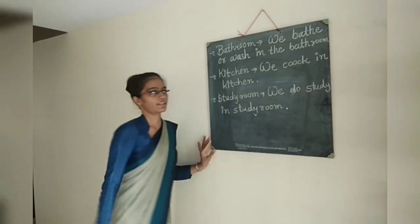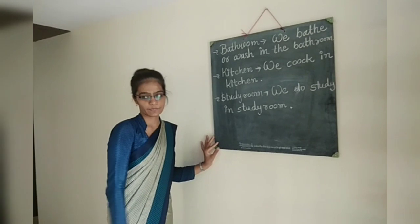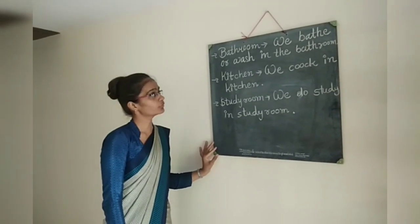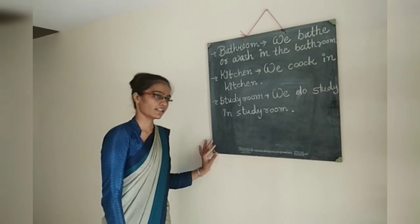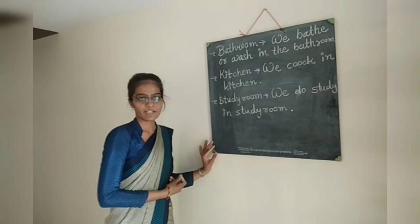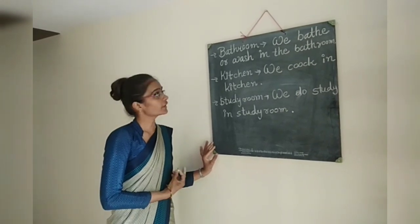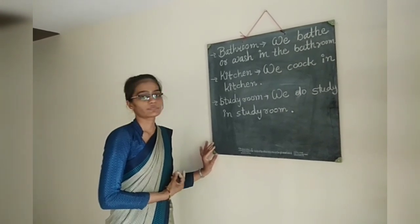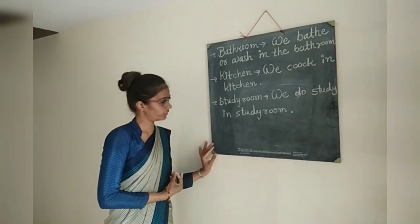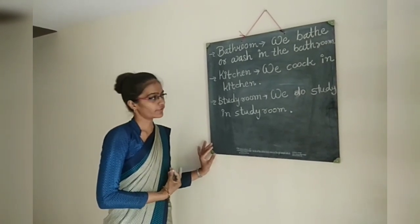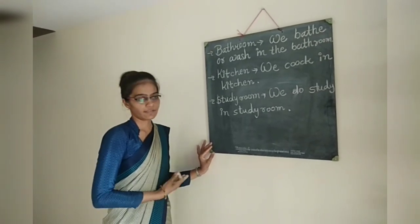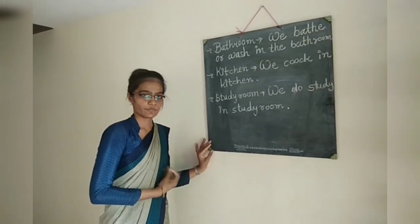So friends, these are the different rooms in a house: Living Room, Bedroom, Bathroom, Kitchen, and Study Room. In the Living Room we meet our friends. In the Bedroom we sleep. In the Bathroom we take bath or wash. In the Kitchen we cook food. And in the Study Room we do study like reading and writing.